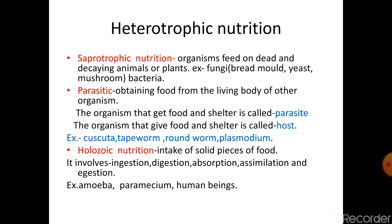Holozoic nutrition is found in human beings, animals, amoeba, and paramecium. In holozoic nutrition, intake of solid pieces of food takes place, which are then digested and absorbed by the organism's body. Because it is a complex form of nutrition, it involves five steps: ingestion, digestion, absorption, assimilation, and egestion — remembered as I-D-A-A-E.